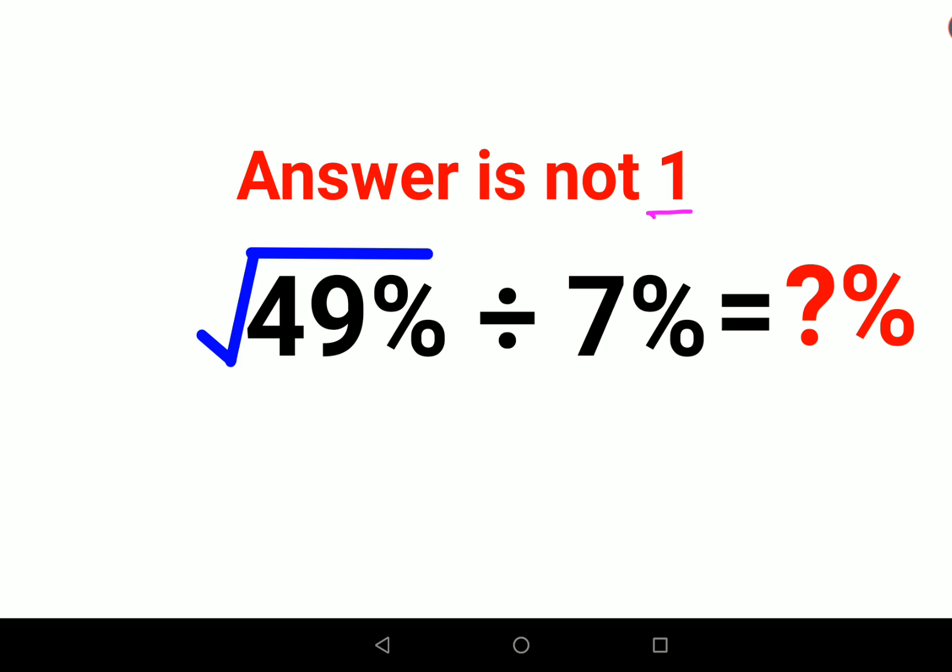Let's first quickly understand how do we find root of 49%. Any number followed by a percentage sign can be written as a fraction by taking that number as your numerator and dividing it by 100. So here this will become 49 upon 100.